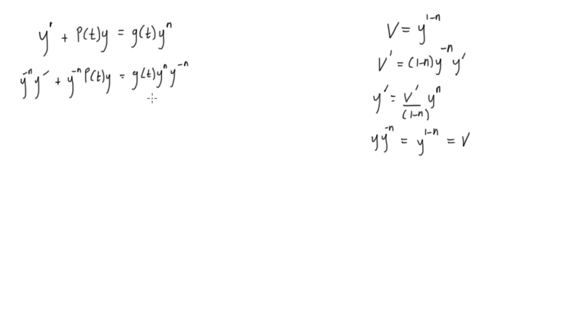All right, so let's take a look at this. We have y to the minus n times y prime. So for the first term we have y prime, and we look over here and we can express y prime as this stuff here, v prime times y to the n over that. So let's just rewrite this. So we have y to the minus n times v prime times y to the power of n. This is all over 1 minus n. All right, so for the next term we have y to the power of minus n times p of t times y.